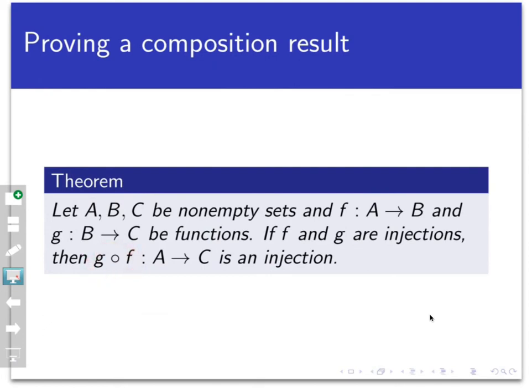That means we need to show that this function has no collisions, that any time I take two distinct inputs from A, I end up with two distinct different outputs in C.